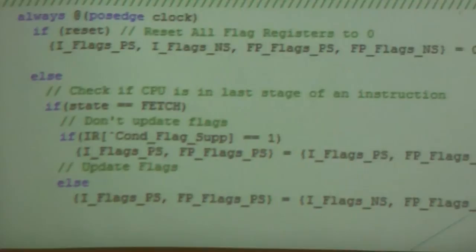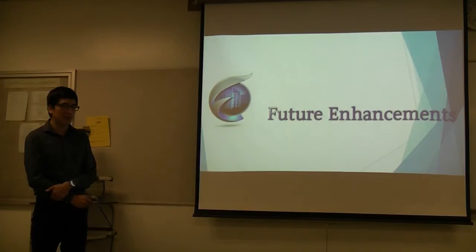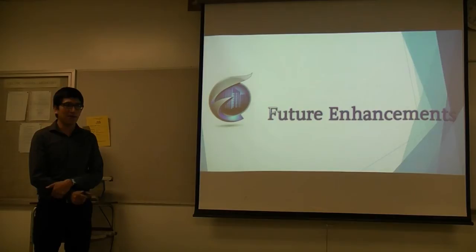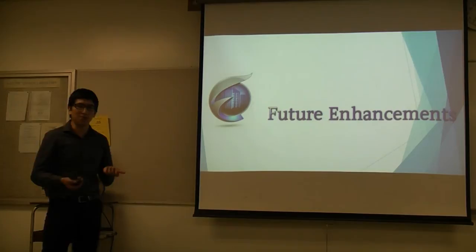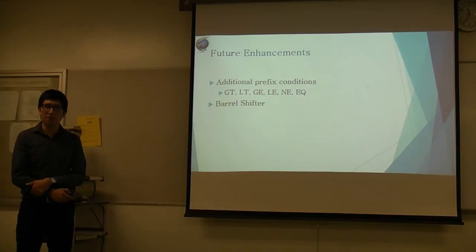For future enhancements, we missed a couple of pretty important conditional prefixes. We missed greater than, less than, less than equal to, greater than equal to, equal to, not equal to. These will all be pretty simple to implement. We will just have to extend our conditional instruction field a little bit, add another bit, and then that way we could implement those prefixes as well, which would really help a lot. The second enhancement we would like is the barrel shifter. We could put it in parallel with the ALU, and I don't believe it would be too difficult to implement.